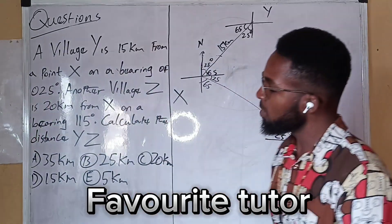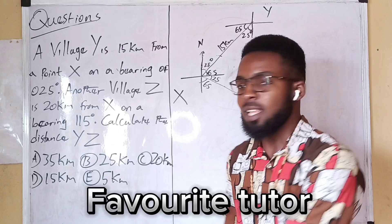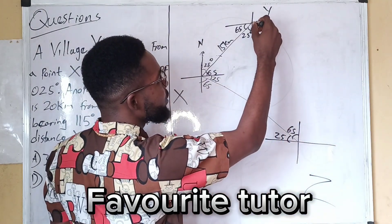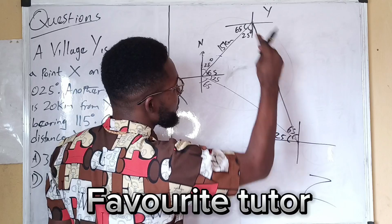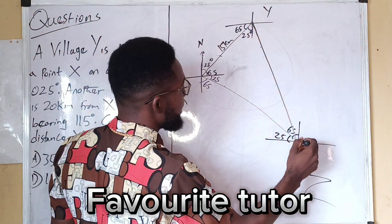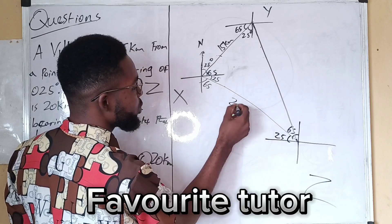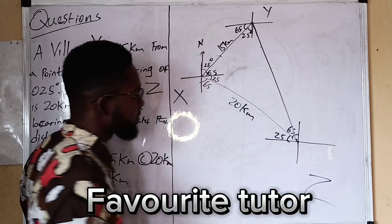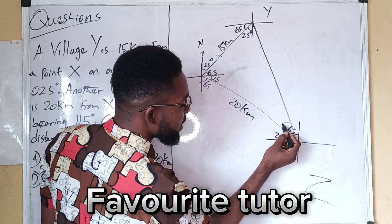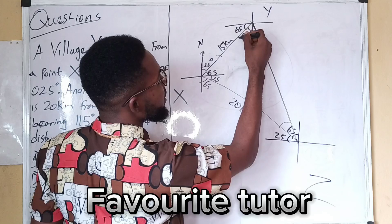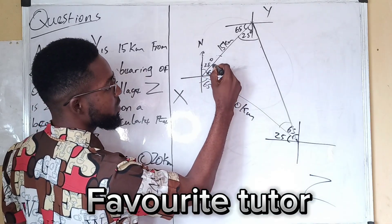The question says: calculate the distance YZ. We are looking for distance YZ — from Y to Z. This is the sketch. The line we are looking for goes from here to here, and this side is 20 kilometers from the question. We are looking for YZ. We don't know those angles individually, but we can see this is a triangle.